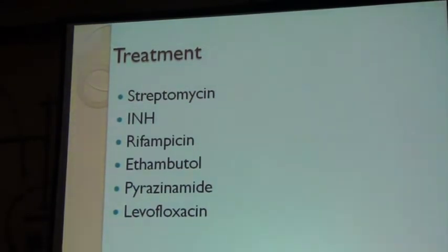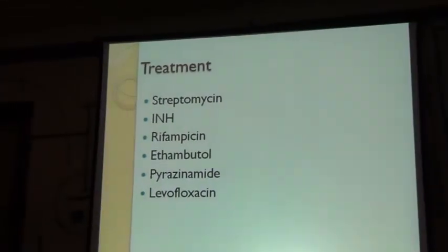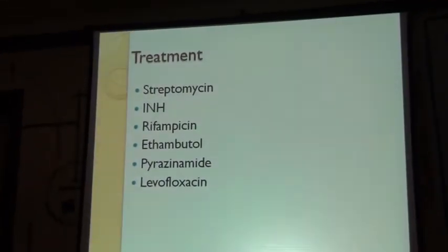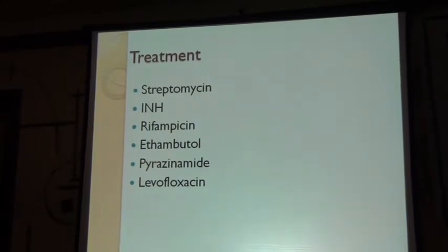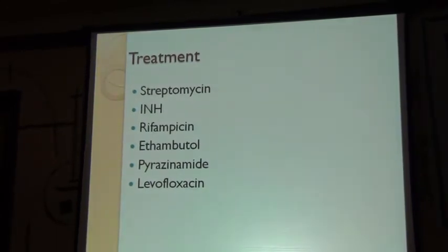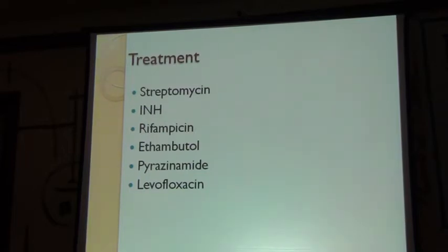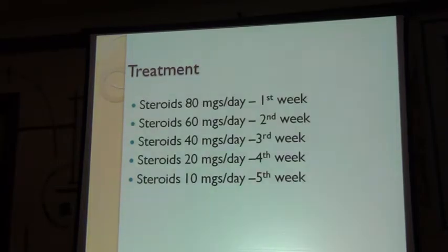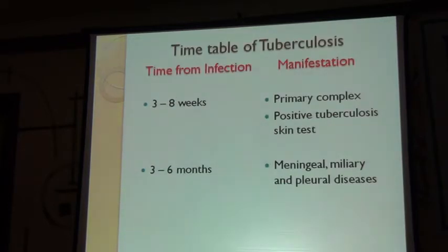I started on seven drugs — I didn't want to take any chance. Levofloxacin 500 mg daily, Septran. Given the low body weight, I chose: Isoniazid 0.3 g, Rifampicin 450 mg, Ethambutol 800 mg, Pyrazinamide 1 gram. I also put her on steroids on a reducing dosage schedule — 80, 60, 40, 20, 10 — every week.